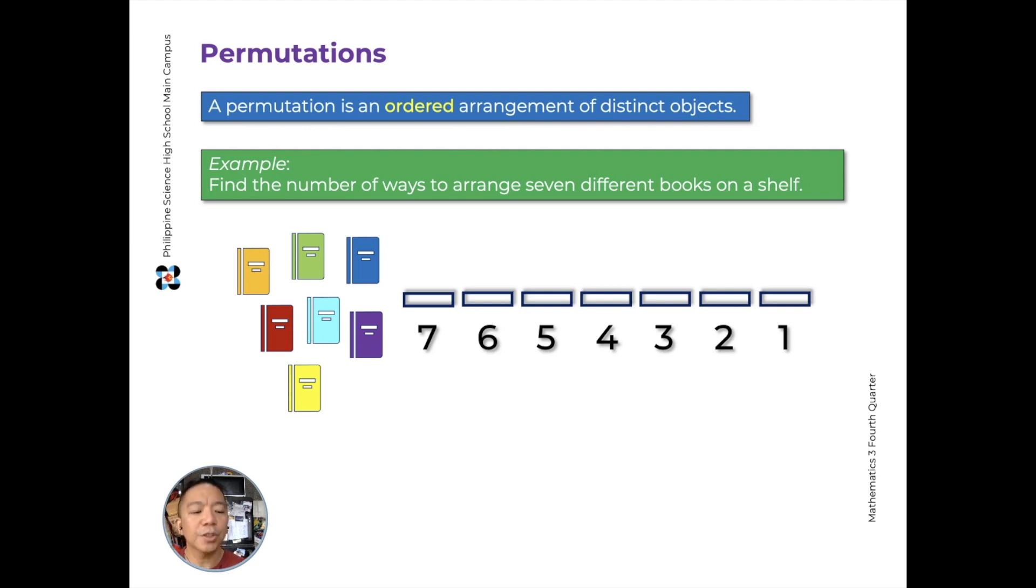It goes in the last position. So the number of ways to arrange 7 books in 7 positions on a shelf will be the product of 7, 6, 5, 4, 3, 2, 1. But that's just 7 factorial, which equals 5,040. So that is our permutation, or that is how we count the number of permutations of 7 distinct objects when we arrange them in a particular order.